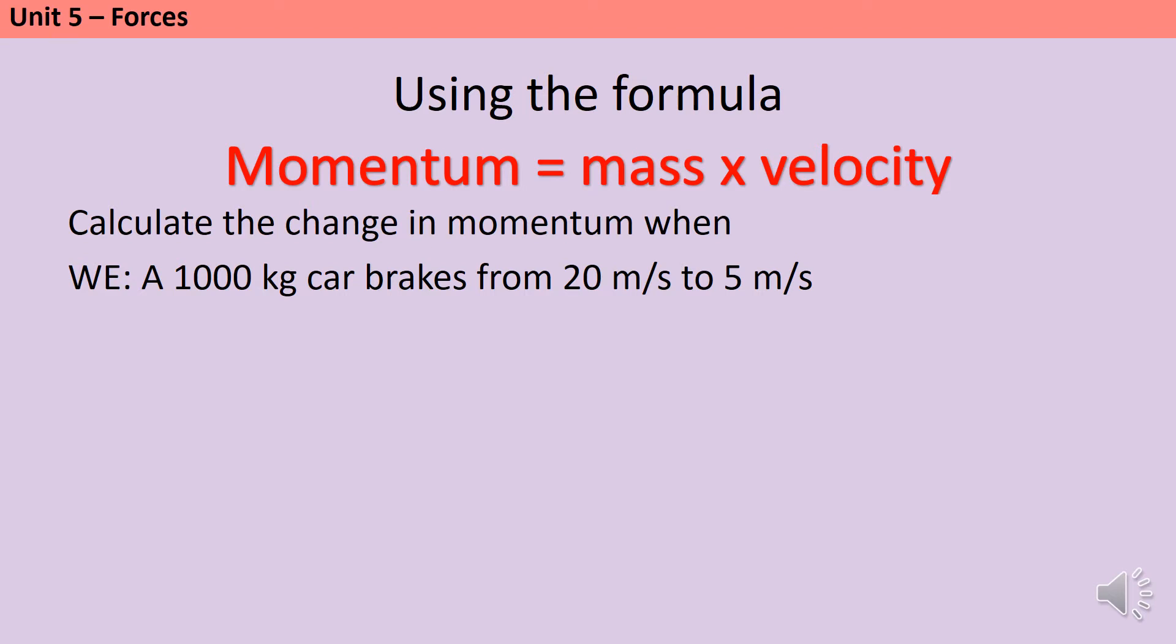In the first method, we work out the momentum at the start and the end, and then look at these two numbers to calculate the difference. So, to begin with, the 1,000 kilogram car is moving at 20 meters per second, so I do 1,000 multiplied by 20 to get 20,000. This is the amount of momentum that the car has at the start of the question.